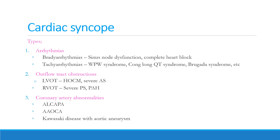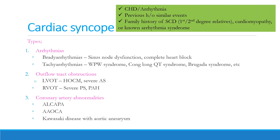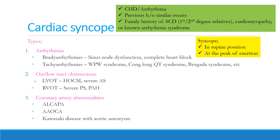Additional cardiac causes include Kawasaki disease with aortic aneurysm. One must also consider cardiac syncope whenever there is a history of congenital heart disease, arrhythmia, prior syncopal events, family history of sudden cardiac death in first or second degree relatives, cardiomyopathy, or known arrhythmia syndrome. Syncope in the supine position or at the peak of exertion are strong pointers towards cardiac syncope.